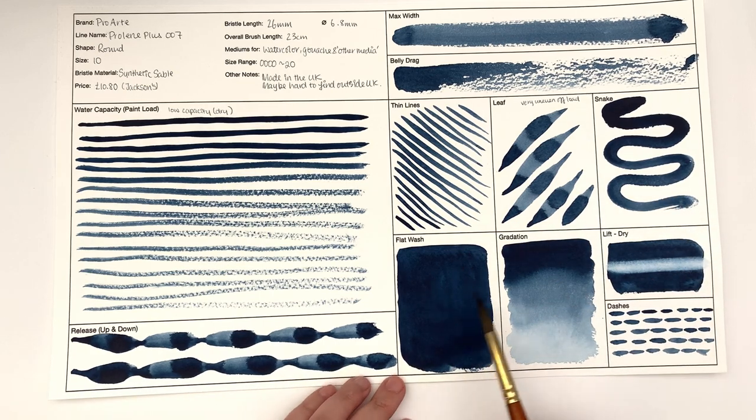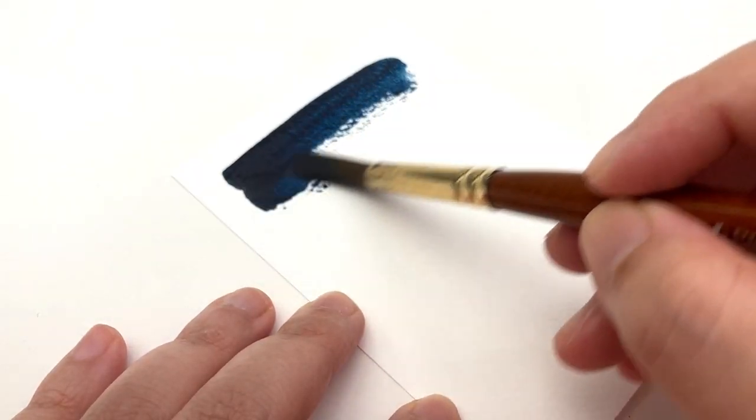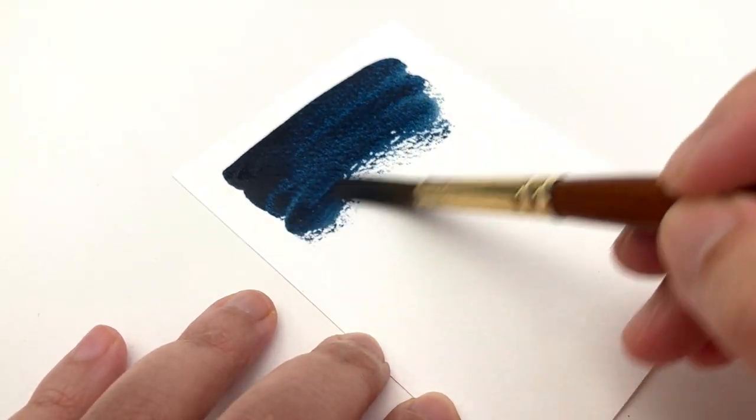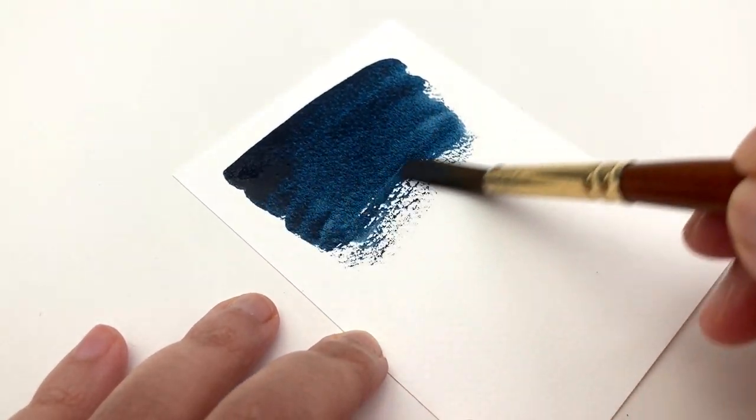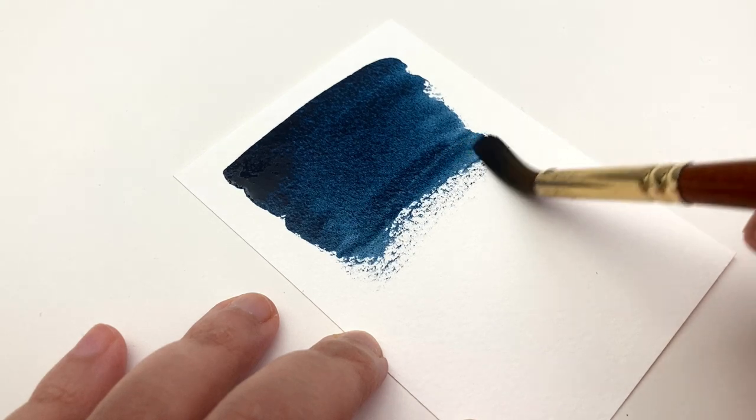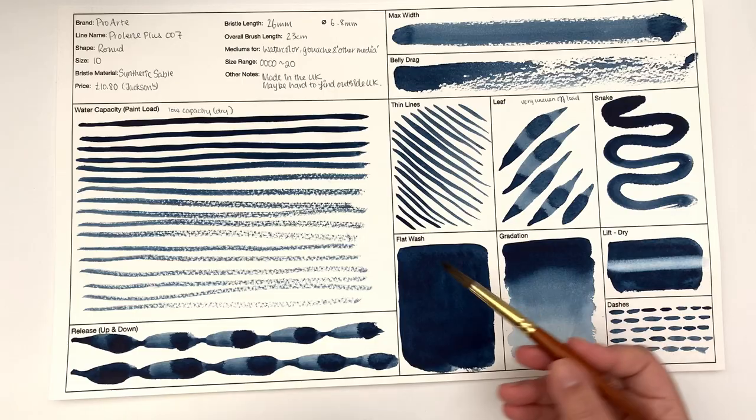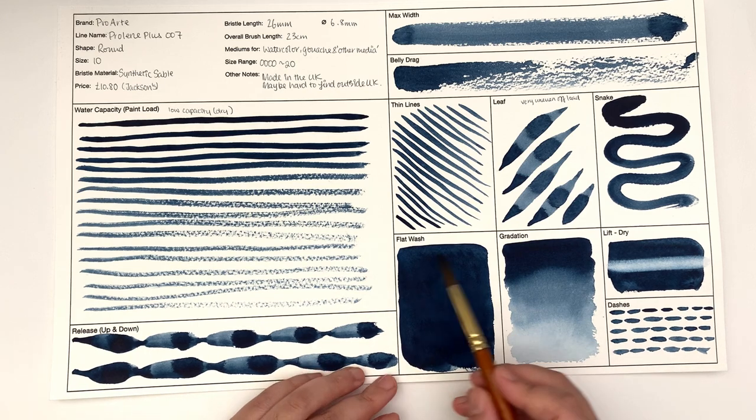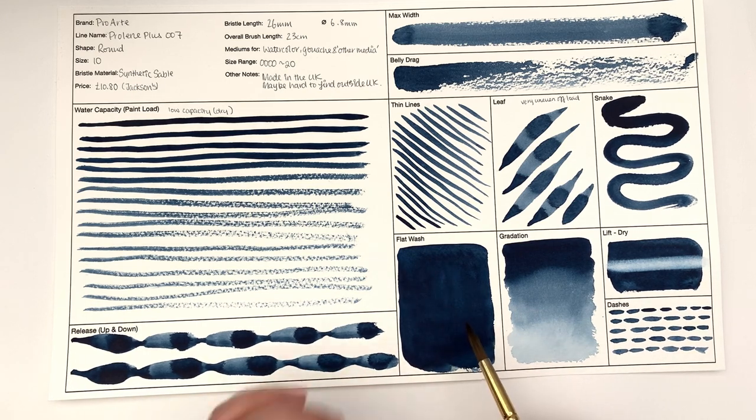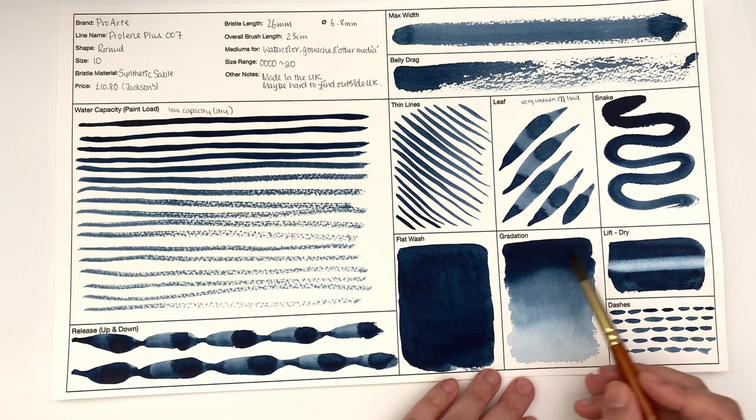In terms of flat wash, you do need to dip into your paint a few times to cover this area. And I mention that now because we will see brushes that can do this whole area in one load. This required a few loads, but not as many as the Princeton Heritage.